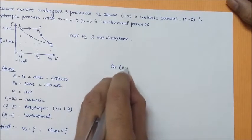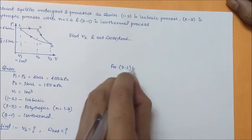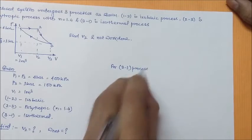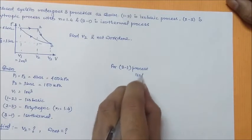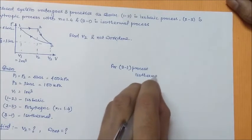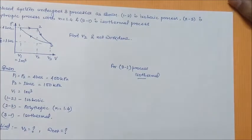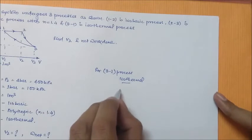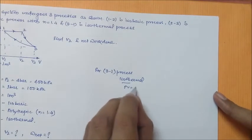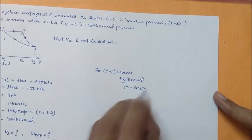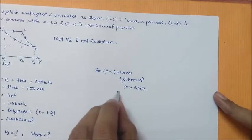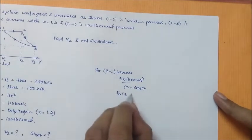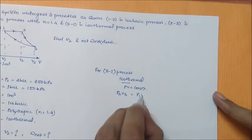For process 3 to 1, it is an isothermal process. It is given in the question. That means PV is equal to constant. So, P3V3 is equal to P1V1.